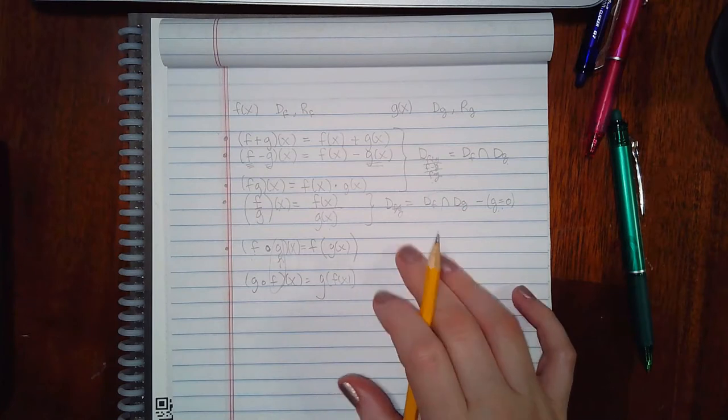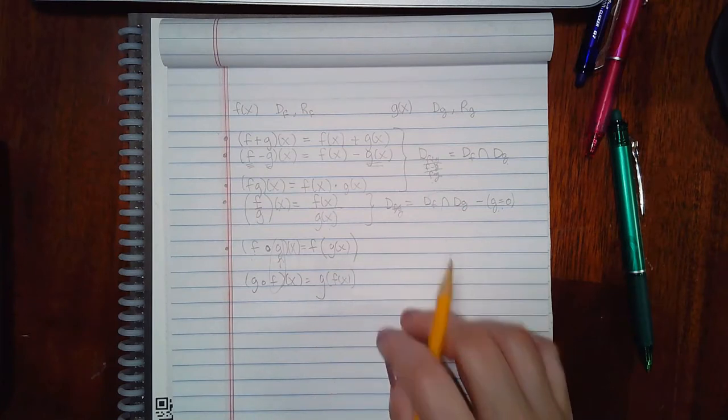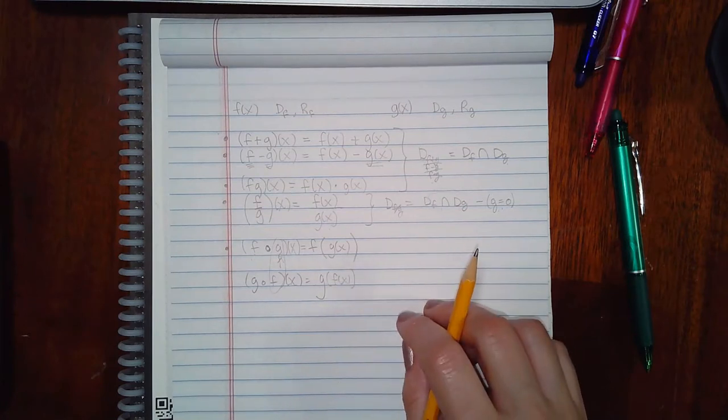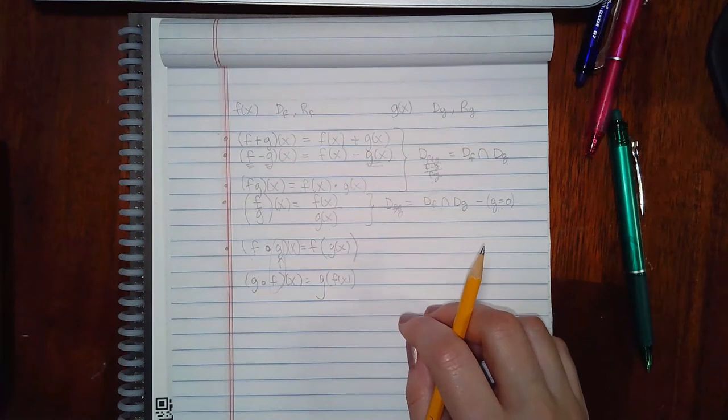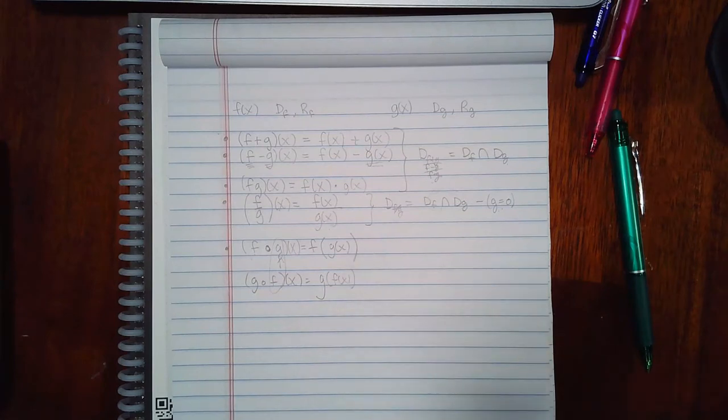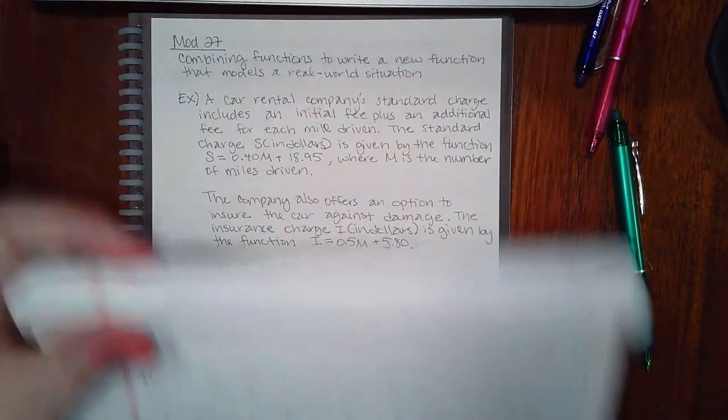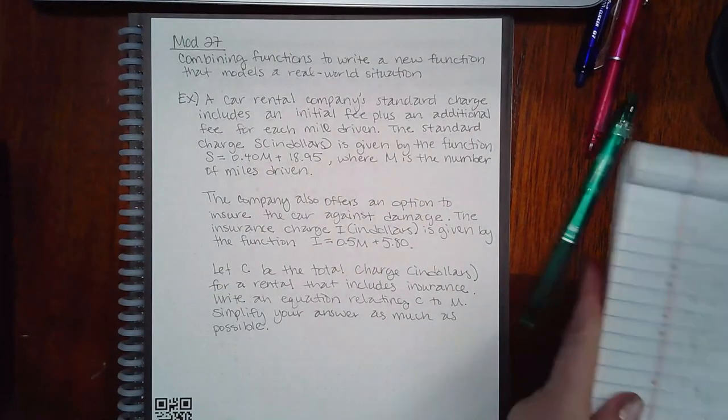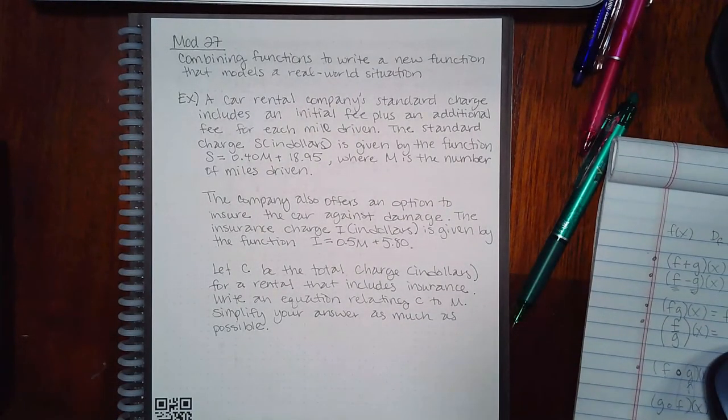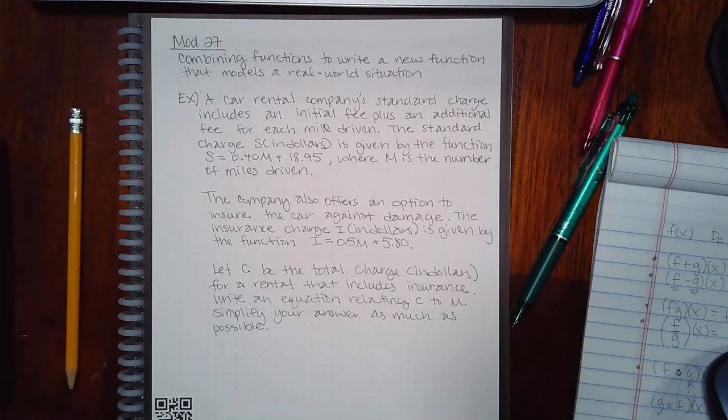And the domains here and the ranges here are a little bit tricky, so we'll talk about those specifically when we get to those sections. So what they want us to do for this first topic is combining functions to write a new function that models a real-world situation. So we have a car rental company.